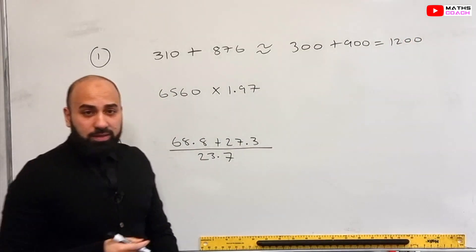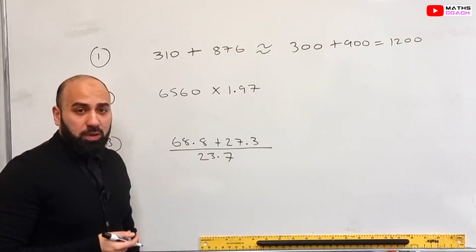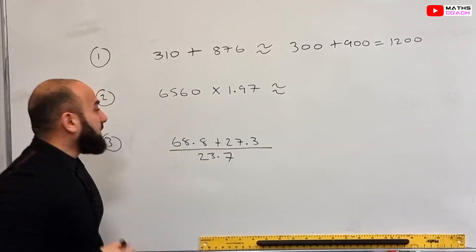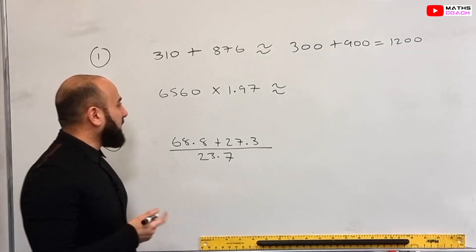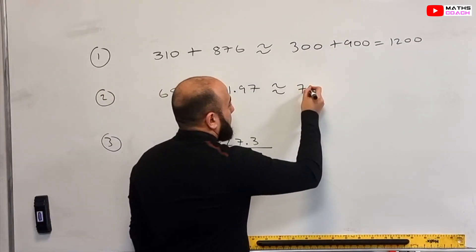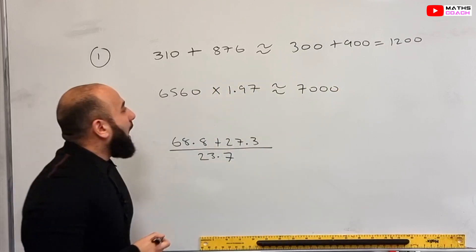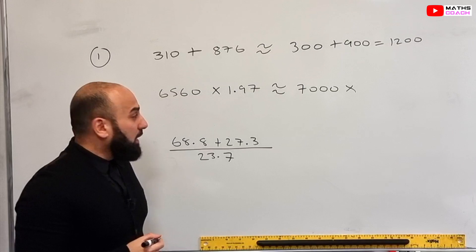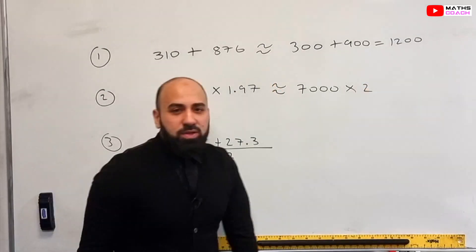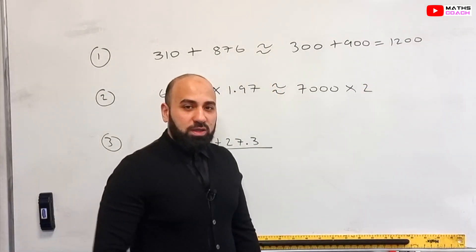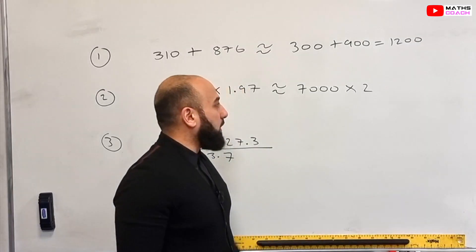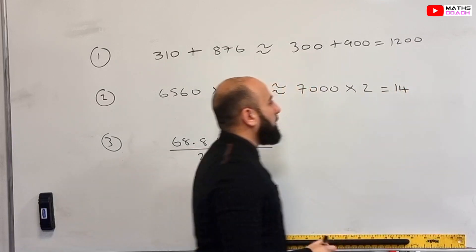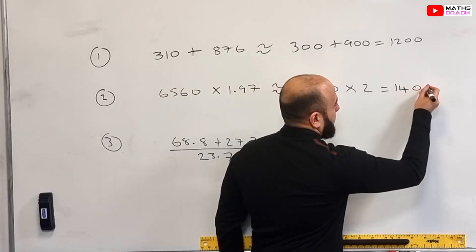Let's look at the second example. This time we're multiplying both numbers. Again, we will round each number to one significant figure. So 6560 to one significant figure is going to be 7000, and we're going to times that with 1.97, rounded to one significant figure, and that will change to 2. So 7000 times 2 is 14000. You can quite easily do that by doing 7 times 2, and that gives you 14. And because there's three zeros at the end, you can just add the three zeros on.